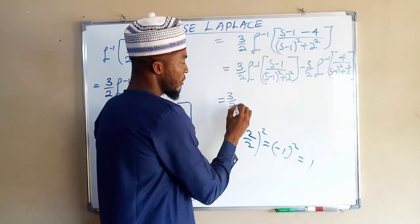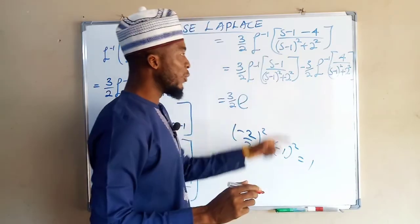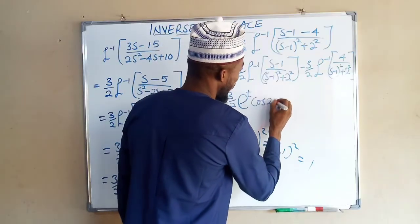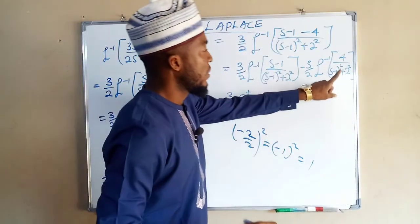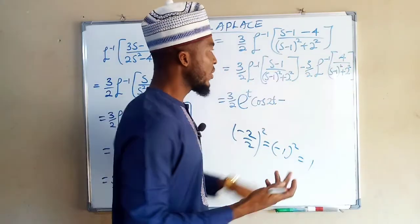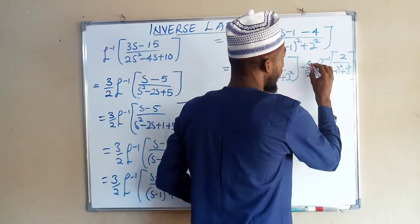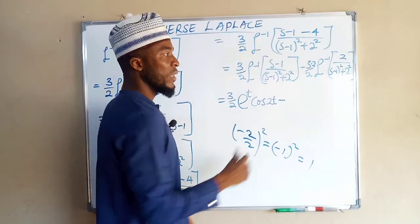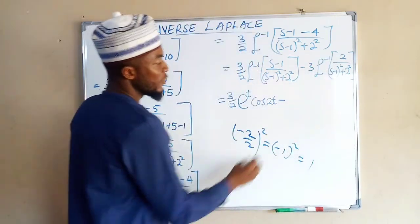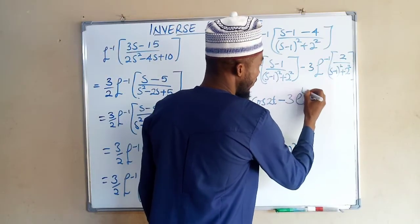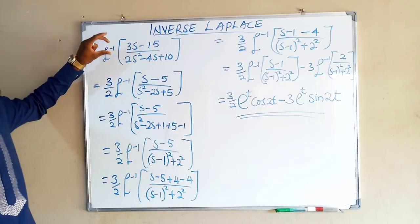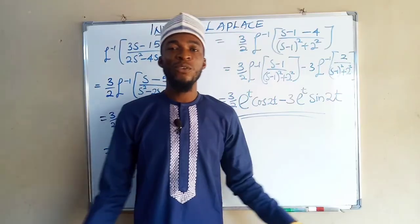For the first term, a equals 1 and b equals 2, giving (3/2)e^t cos(2t). For the second term, we need a 2 in the numerator for the sine form, so we factor out 2, giving 4 over (s minus 1)² plus 2² as 2 times 2. The coefficient becomes (3/2) times 2 times (1/2), simplifying to 3. Hence the final answer is (3/2)e^t cos(2t) minus 3e^t sin(2t). This is the solution for the inverse Laplace transform of this function. Thank you for watching and do have a nice day.